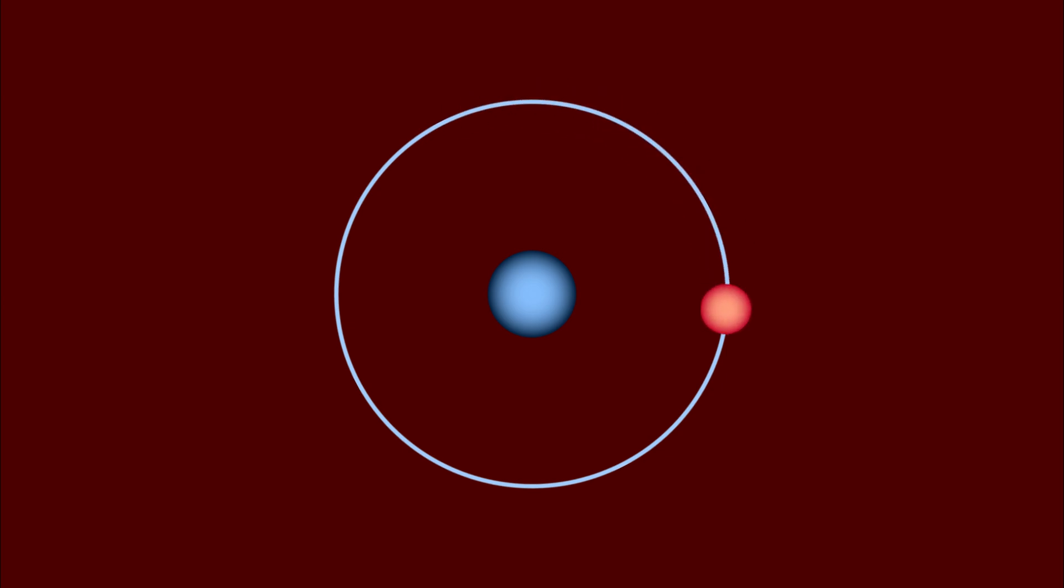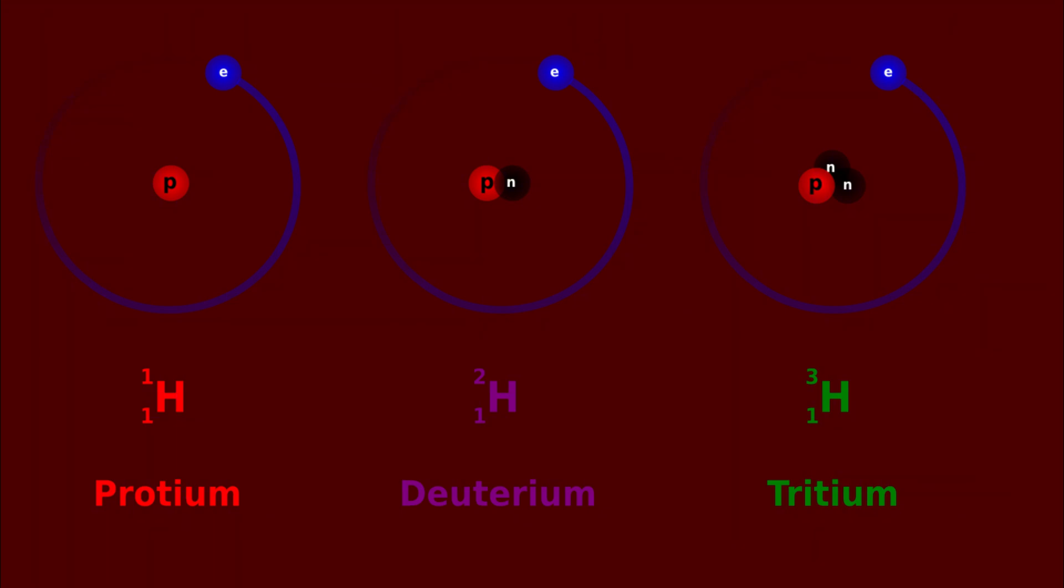It's the lightest and most simple of the elements, consisting of just one proton and one electron, although sometimes it likes to pair up with a neutron or two in exotic compounds like heavy water. Hydrogen weighs roughly one atomic unit and has an average boiling point of only negative 259 degrees Celsius or 14 Kelvin.